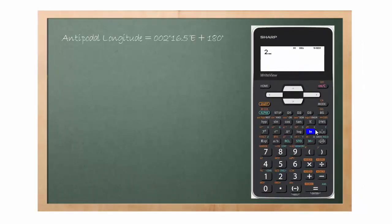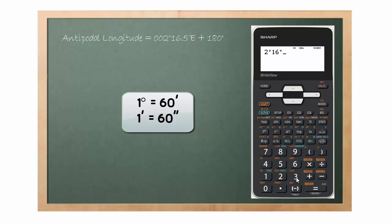2 degree, 16.5 minute. 0.5 is equal to 30 seconds. 30 seconds plus 180 degree equal to 182 degree.